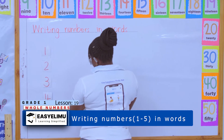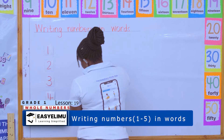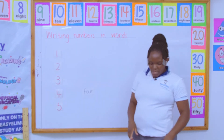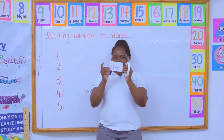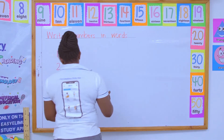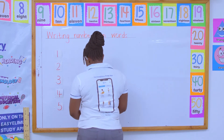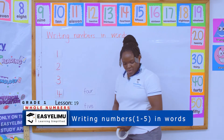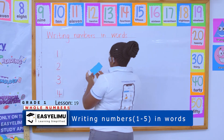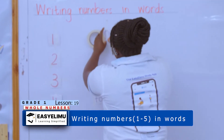Now I want to put it jumbled up so that you help me match the number. You will have to match for me the figure and the word. Which word is this? The word is 'five.' The word is 'five.' Where is number five? Number five is down here.